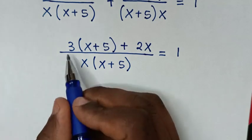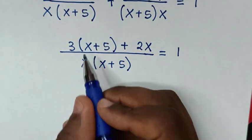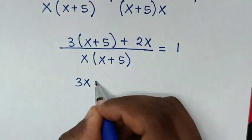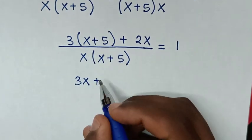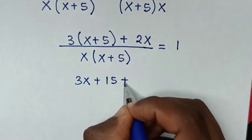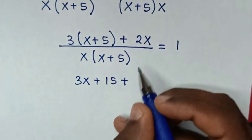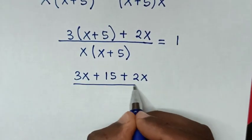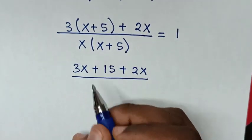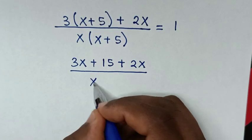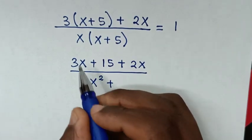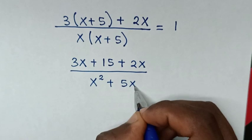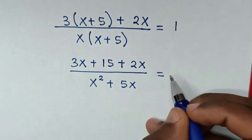Then our equation will be 3 times x is 3x, then plus 3 times 5 is 15, then plus 2x, over x times x is x squared, plus x times 5 is 5x, is equal to 1.